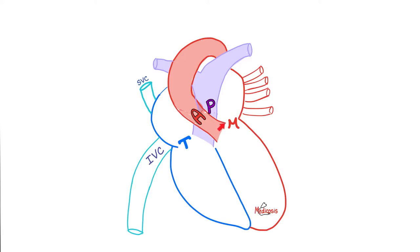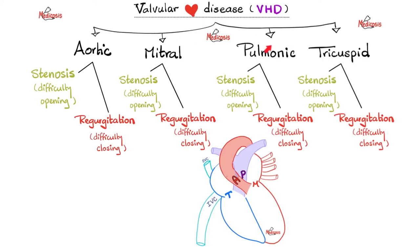Your heart has four valves: the mitral valve, the tricuspid valve, the aortic valve, and the pulmonic valve. The mitral valve exists between the left atrium and the left ventricle. The tricuspid valve is located between the right atrium and the right ventricle. The aortic valve is between the left ventricle and the aorta, whereas the pulmonic valve is between the right ventricle and the pulmonary trunk. Each one of these four valves can undergo one of two diseases: stenosis and regurgitation. Regurgitation is also known as insufficiency or incompetence.